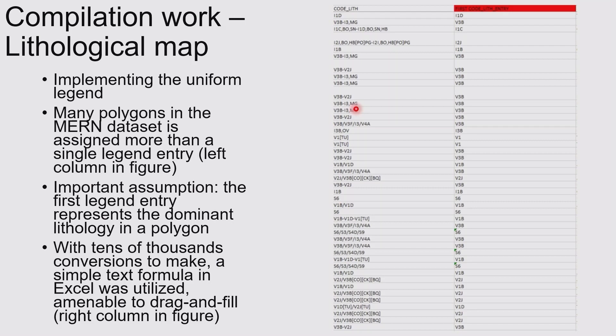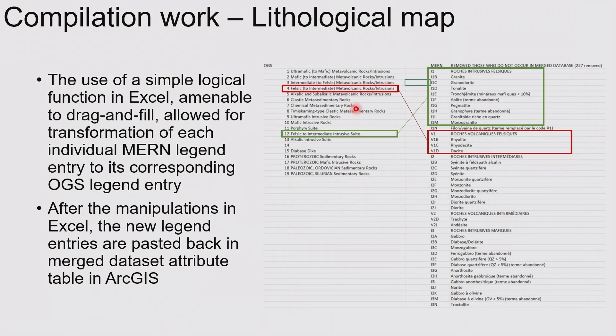One of the details on the Quebec side is that oftentimes their polygons would have more than one rock type — so there would be multiple different lithologies within each polygon. One of the assumptions we made was to view the first entry as the dominant lithology within a polygon. You could sort that out in Excel and get it down to just one lithology per polygon, and then do some more Excel work to merge the Quebec legend into an Ontario legend, and then everything was leveled.